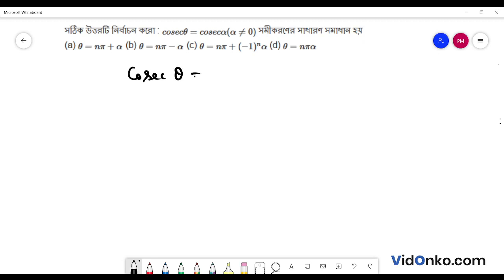cos theta is equal to cos alpha. Now, let's see, sin theta is equal to sin alpha. So theta is equal to n pi plus minus 1 whole to the power n into alpha. That's the option c.